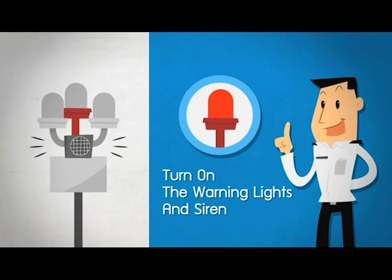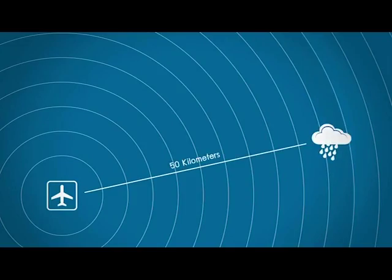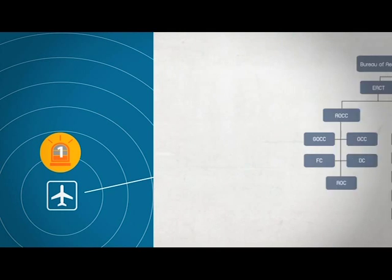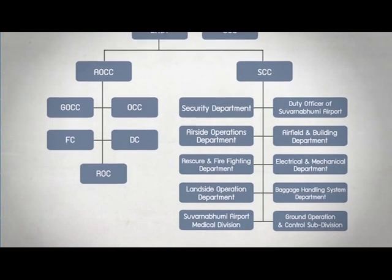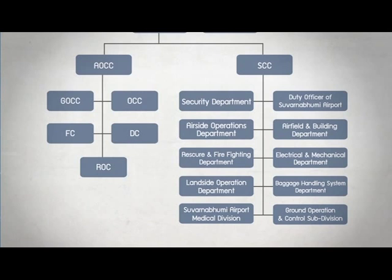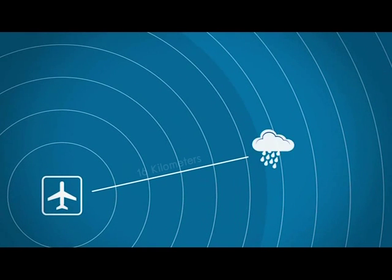To completely notify you all the aspects of weather features, we have split the notification of adverse weather conditions into three levels. Level 1: when thunderstorms are detected within 50 kilometers and their directions are heading towards Suanapum Airport, there is a notification flowchart of thunderstorms warning as following. We will start notifying everyone by using the phrase 'thunderstorms warning.'